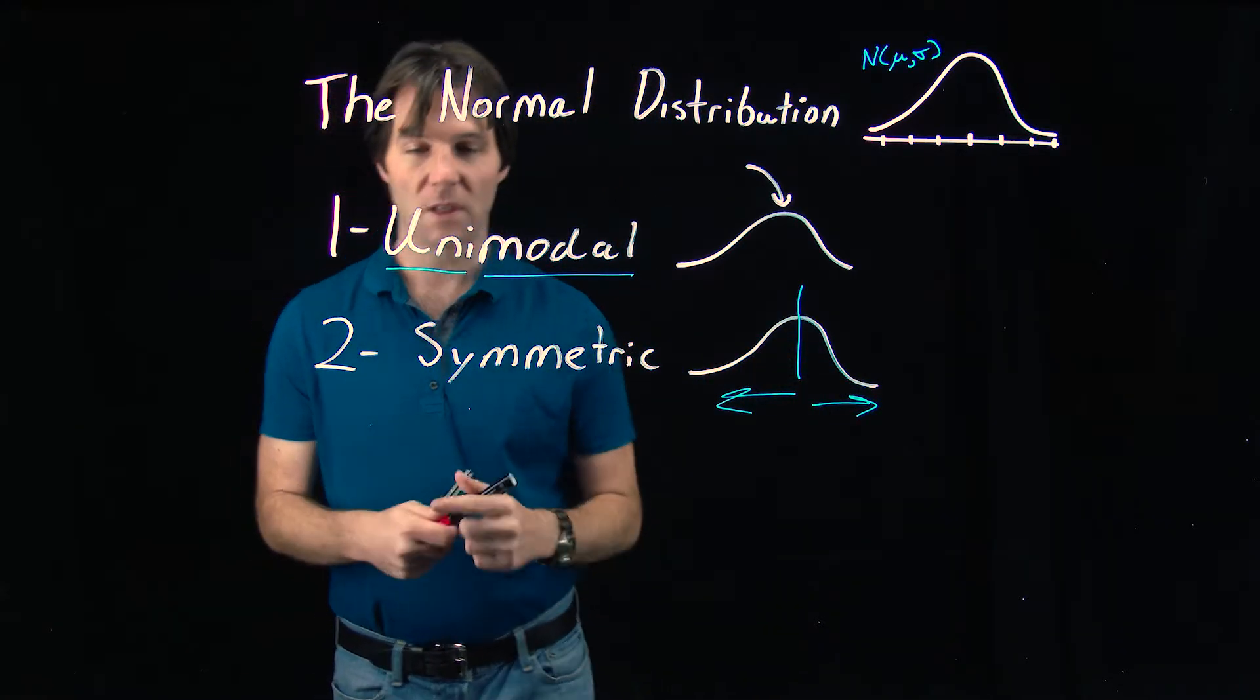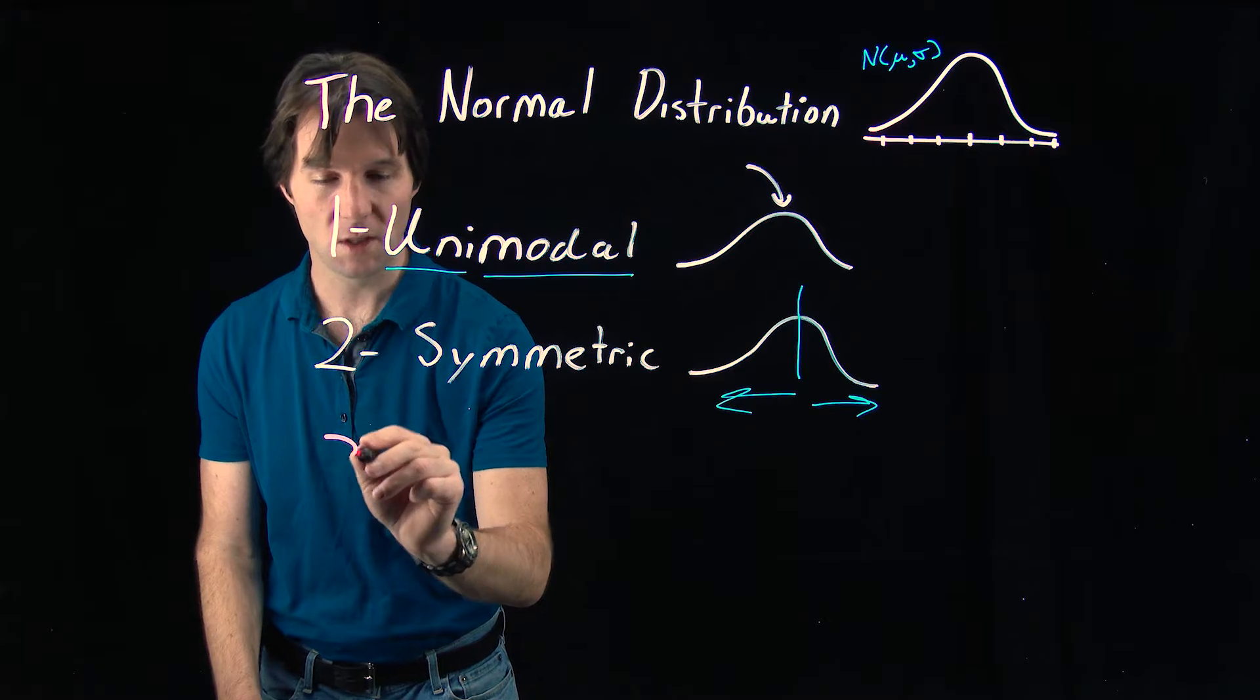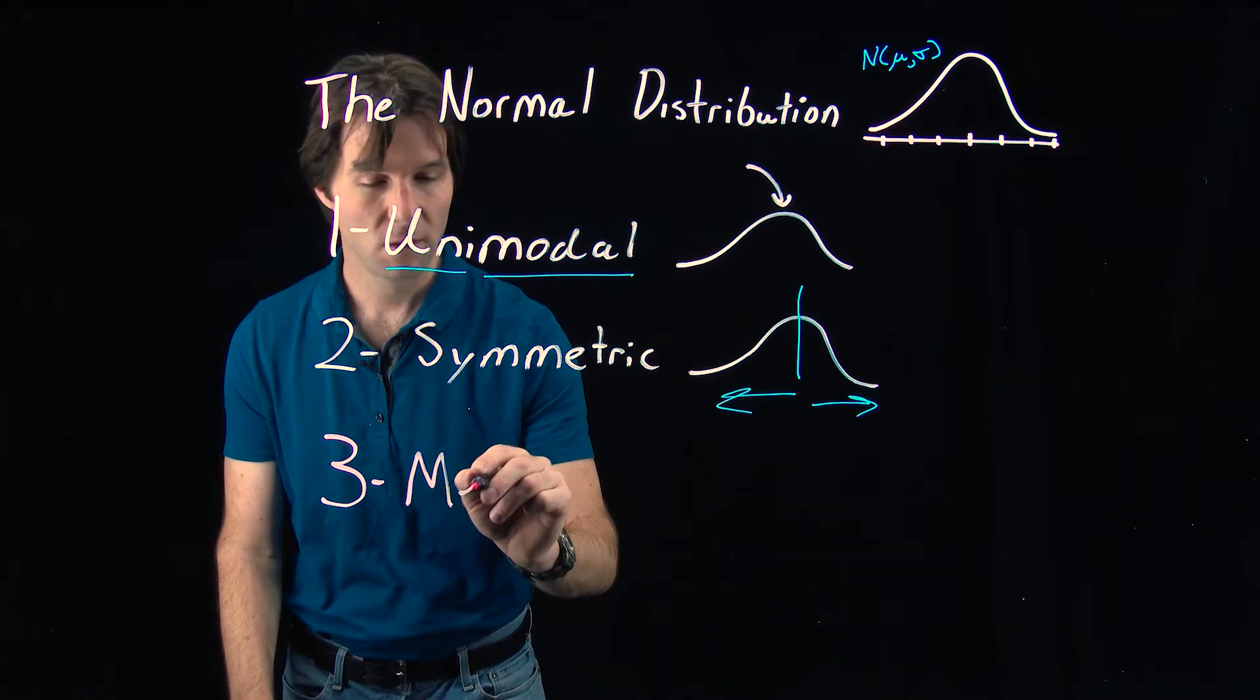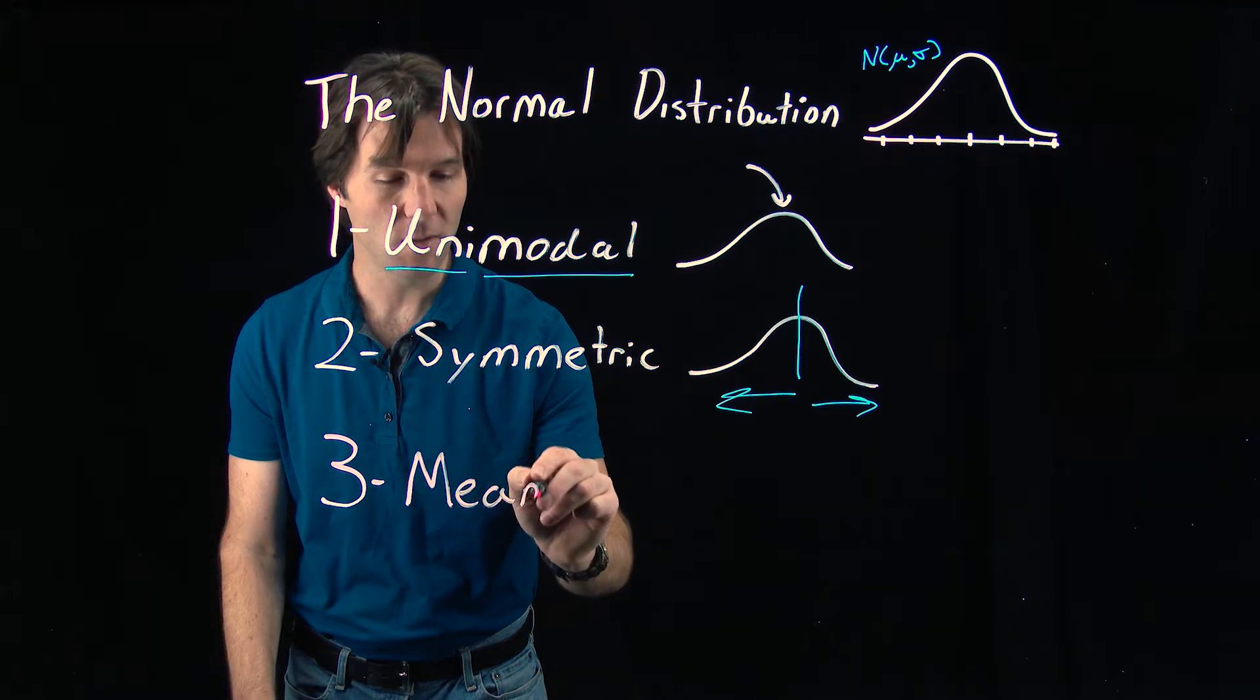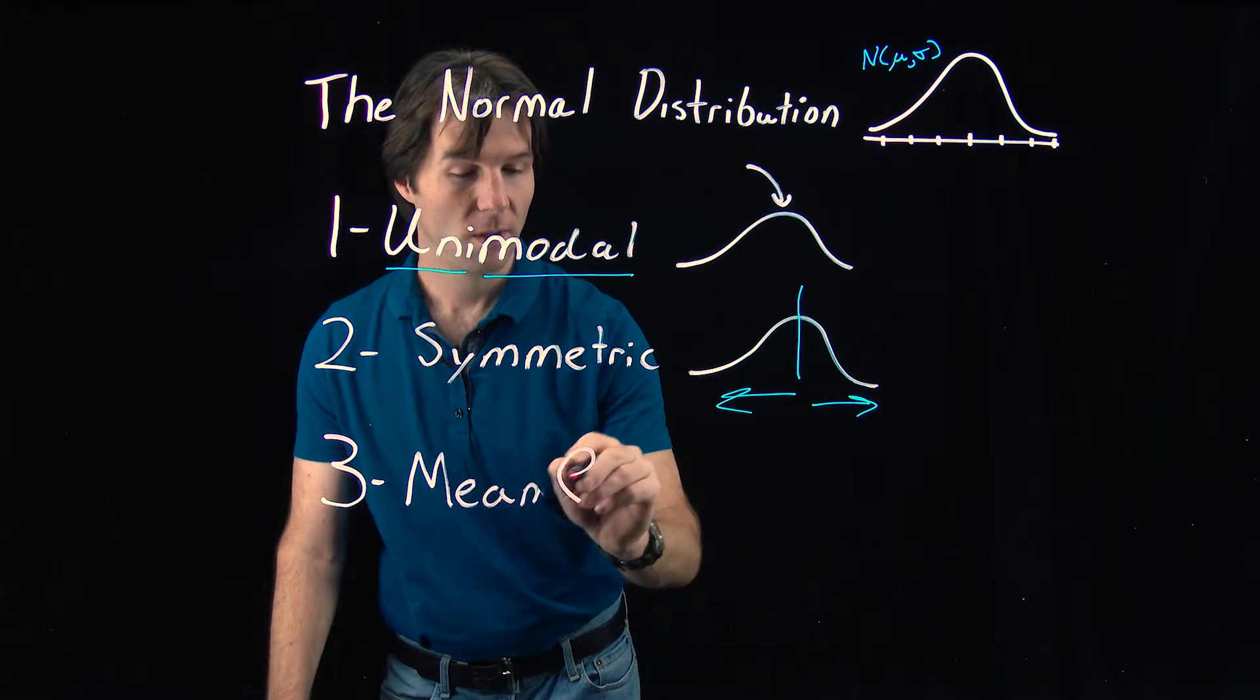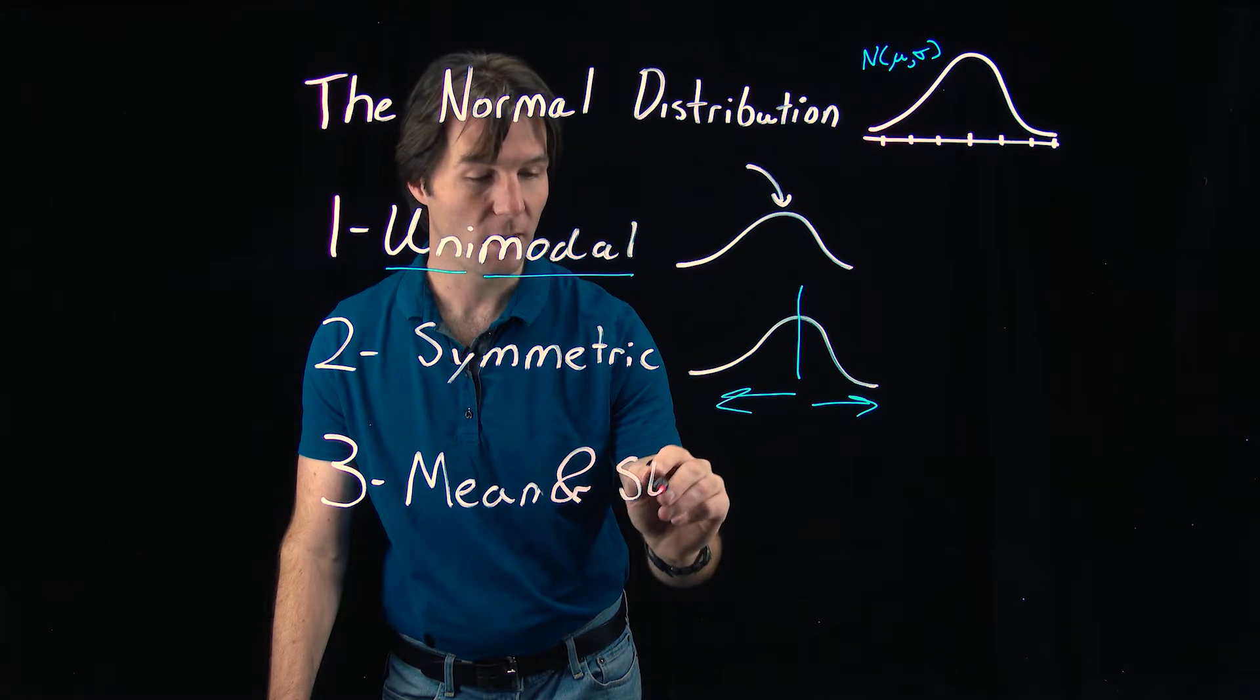Next, we'll get to the complicated one, which is that the curve has a mean and a standard deviation. The mean is the average of all the values and is found right at the center of the curve. The standard deviation is a measure of spread.